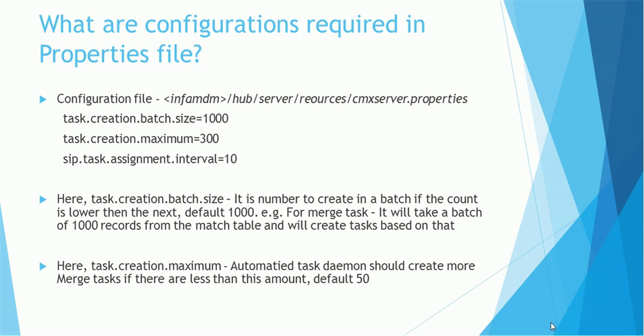There are some configurations which need to be made in order for ActiveOS to work. These configurations need to be set in the Hub Server Resources CMX Server dot properties file. The properties are: task.creation.batch.size — default value is 1000; task.creation.maximum — default value is 50; and sip.task.assignment.interval — equal to 10. These are the important properties we need to configure in order for ActiveOS to work properly.